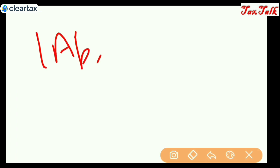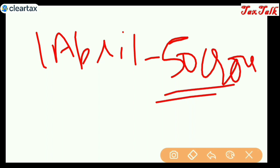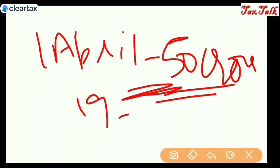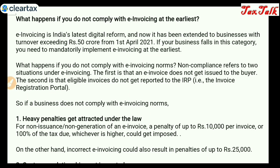As we know, e-invoicing is applicable from 1st April. On how much turnover? For those whose aggregate turnover crosses 50 crore in a full financial year. How do you check the 50 crore threshold? In any of the financial years — 17-18, 18-19, 19-20, or 2021 — if it exceeds 50 crore in any one year, then e-invoicing is applicable. If you do not generate the e-invoice, the other person will not get the credit.